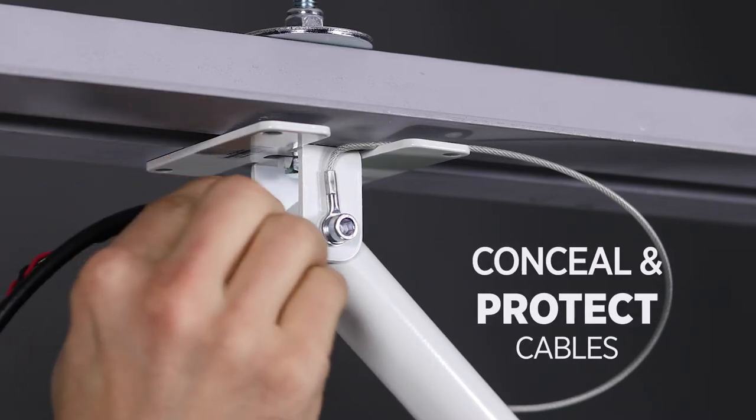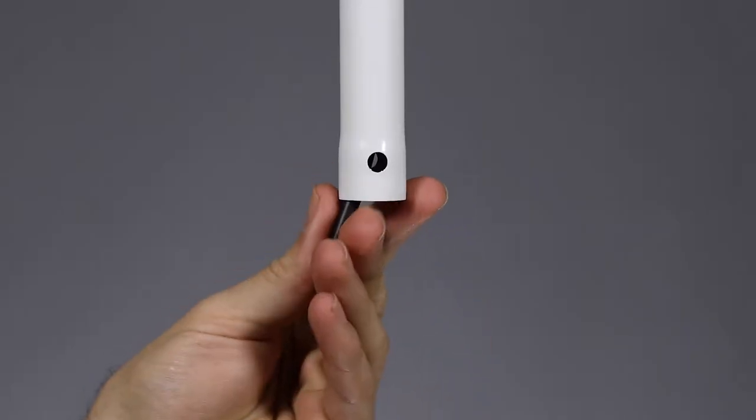With its extruded steel tube, all power and video cables can be concealed and protected inside the pole.